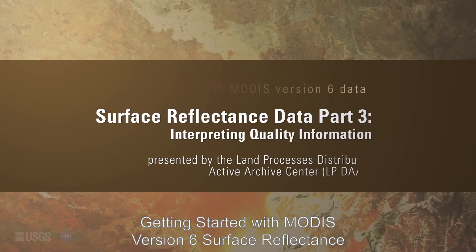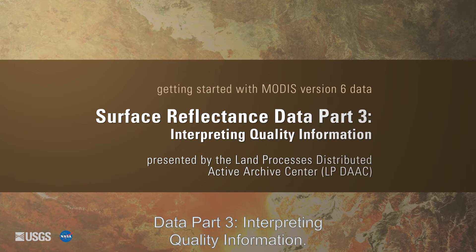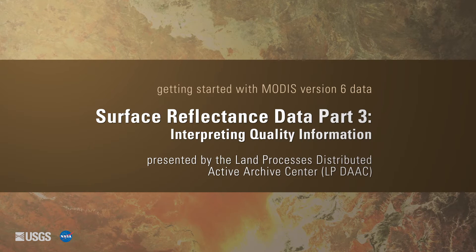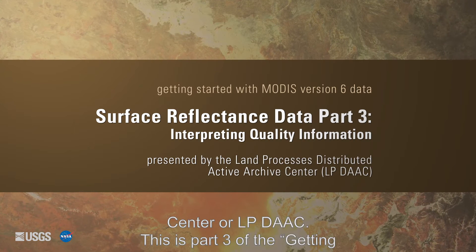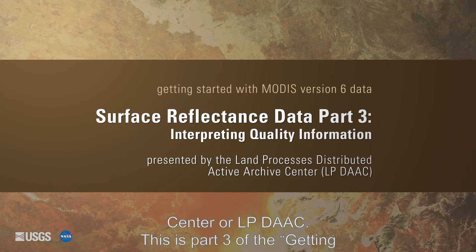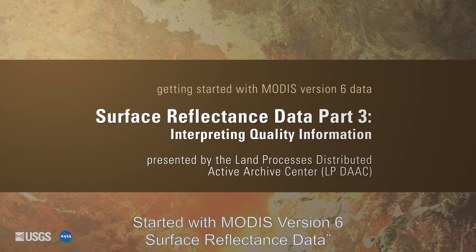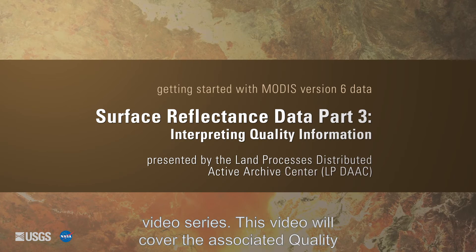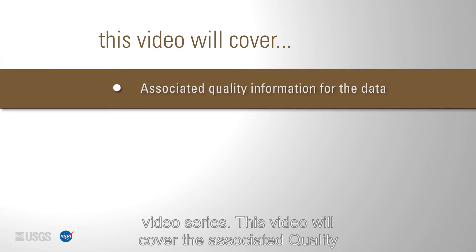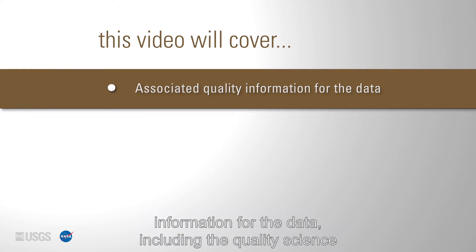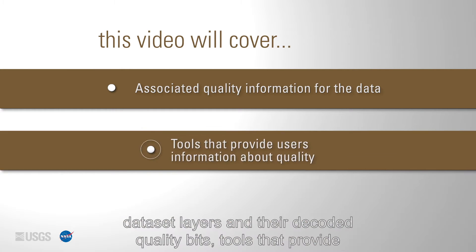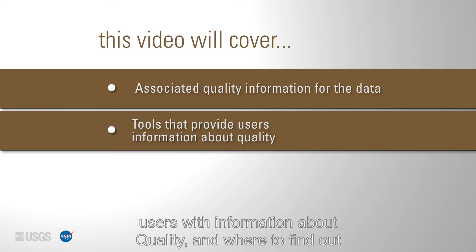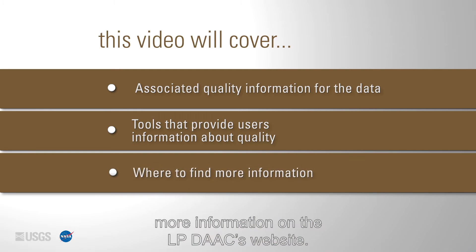Getting started with MODIS version 6 surface reflectance data, part 3: interpreting quality information. Presented by the Land Processes Distributed Active Archive Center, or LP DAAC. This is part 3 of the getting started with MODIS version 6 surface reflectance data video series. This video will cover the associated quality information for the data, including the quality science data set layers and their decoded quality bits, tools that provide users with information about quality, and where to find more information on the LP DAAC website.